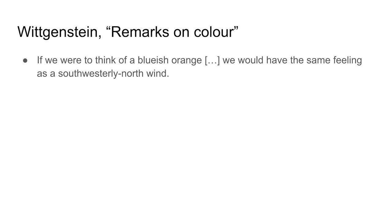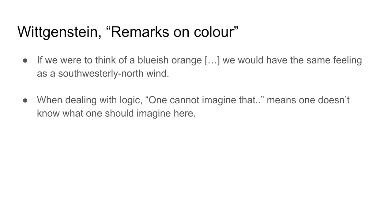Before jumping into Houdini, I wanted to read two important lines from Wittgenstein's Remarks on Color. First: 'If we were to think of a bluish orange, we would have the same feeling as a southwesterly north wind.' Take a moment to try and imagine a bluish orange—not a gradient. Is it possible? And if I tell you it's not possible, does that make you relieved, or do you get cross and disagree?